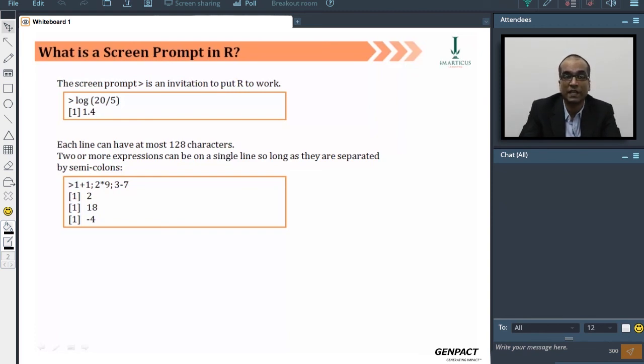Each line of R code can have a maximum of 128 characters. That doesn't mean you cannot write code more than 128 characters; it only means that on a single line you can have 128 characters. If you have to put code on the next line, you use a plus sign as a separator that tells R the remaining code is on the next line. You can say 1 plus 1 semicolon, 2 asterisk 9, and 3 minus 7 - when you use the semicolon operator, it indicates that on the same line you have three different statements to be executed. That's how you tell R these are standalone statements which have to be executed separately.